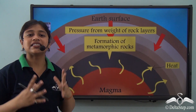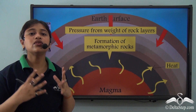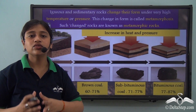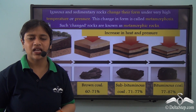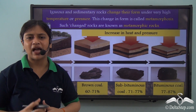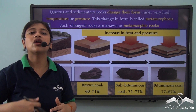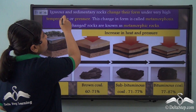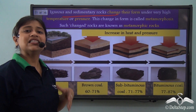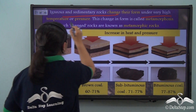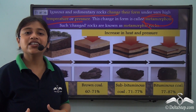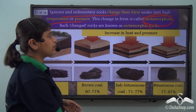Igneous rocks, after getting heat from the magma and pressure from the rocks, turn into metamorphic rocks. This also happens with sedimentary rocks. The sedimentary rocks that settle down on the bed of water bodies, on receiving heat from the magma and pressure from the rocks over the years, convert into metamorphic rocks. This process of change in the form of rocks — both igneous and sedimentary — under very high pressure and temperature is known as metamorphosis, giving rise to metamorphic rocks, the third type.